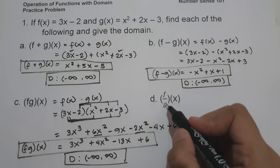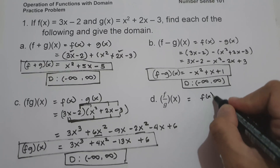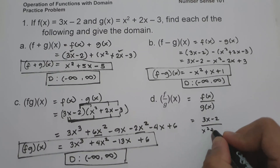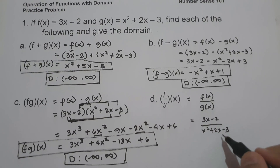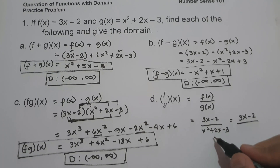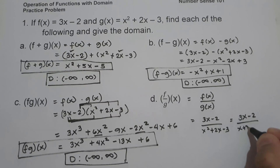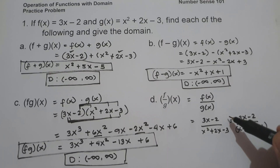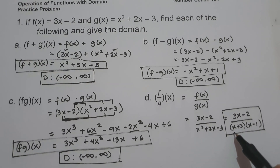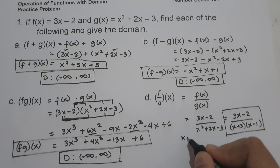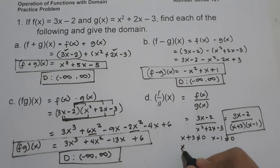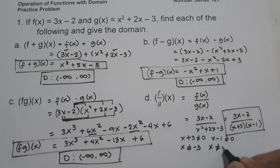On letter d, we have (f/g)(x) = f(x) / g(x) = (3x − 2) / (x² + 2x − 3). We can factor the denominator: x² + 2x − 3 = (x + 3)(x − 1). So (f/g)(x) = (3x − 2) / [(x + 3)(x − 1)]. For the domain, the denominator cannot equal zero: x + 3 ≠ 0 and x − 1 ≠ 0, meaning x ≠ −3 and x ≠ 1.